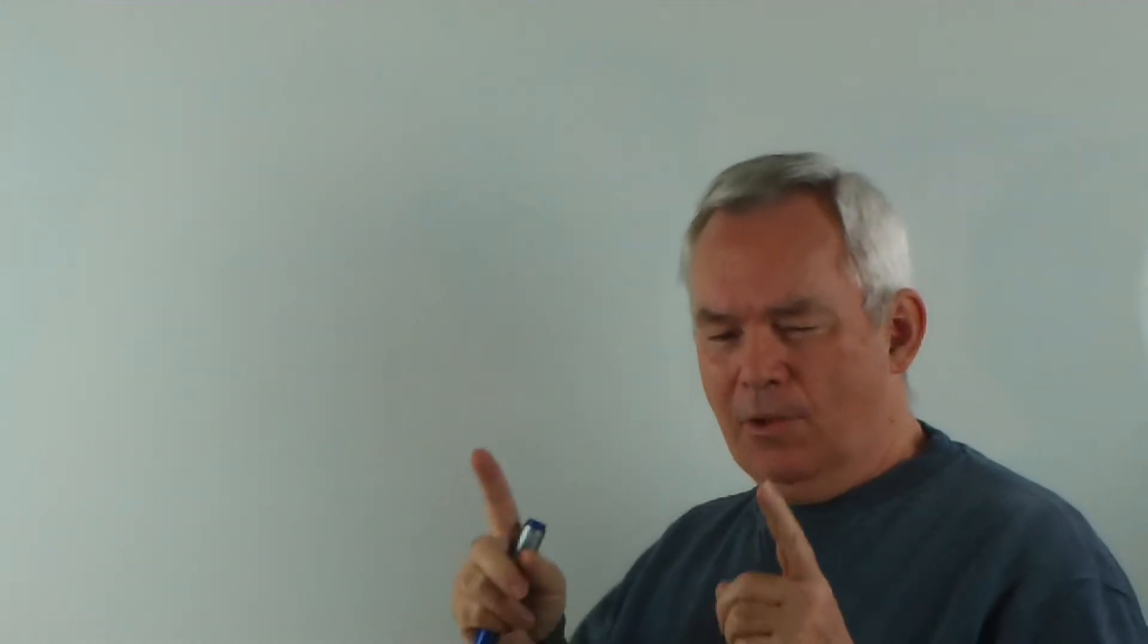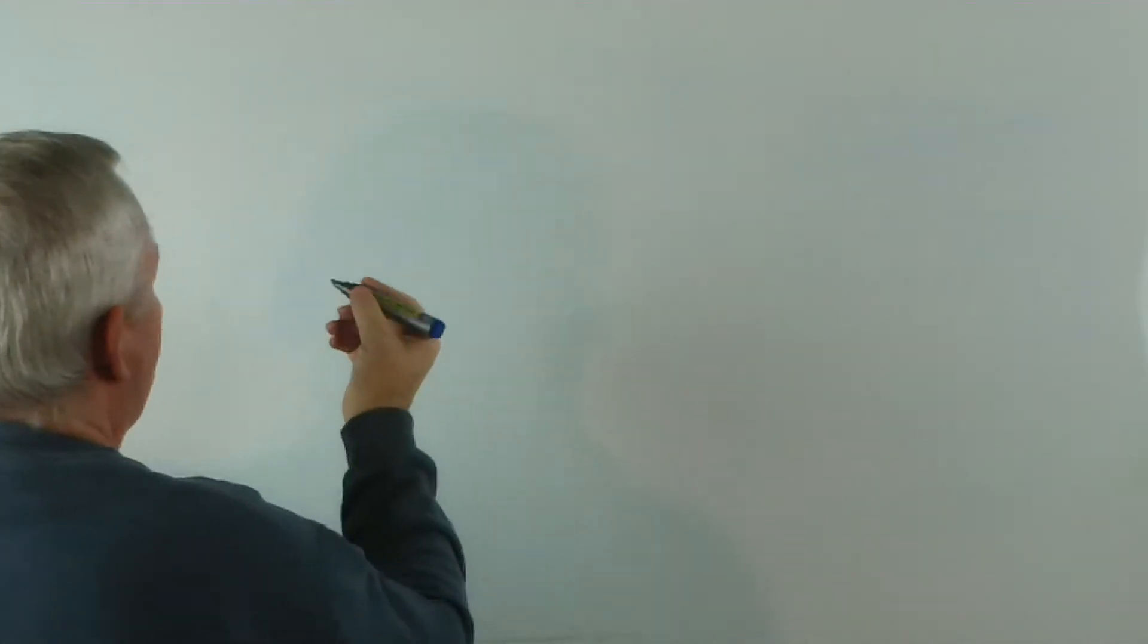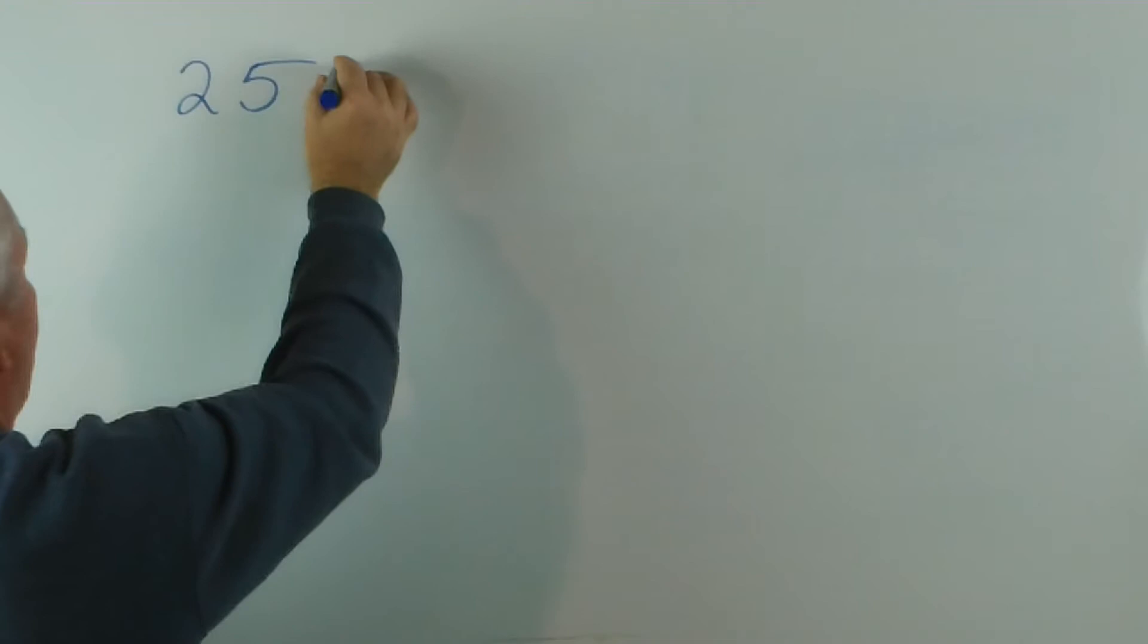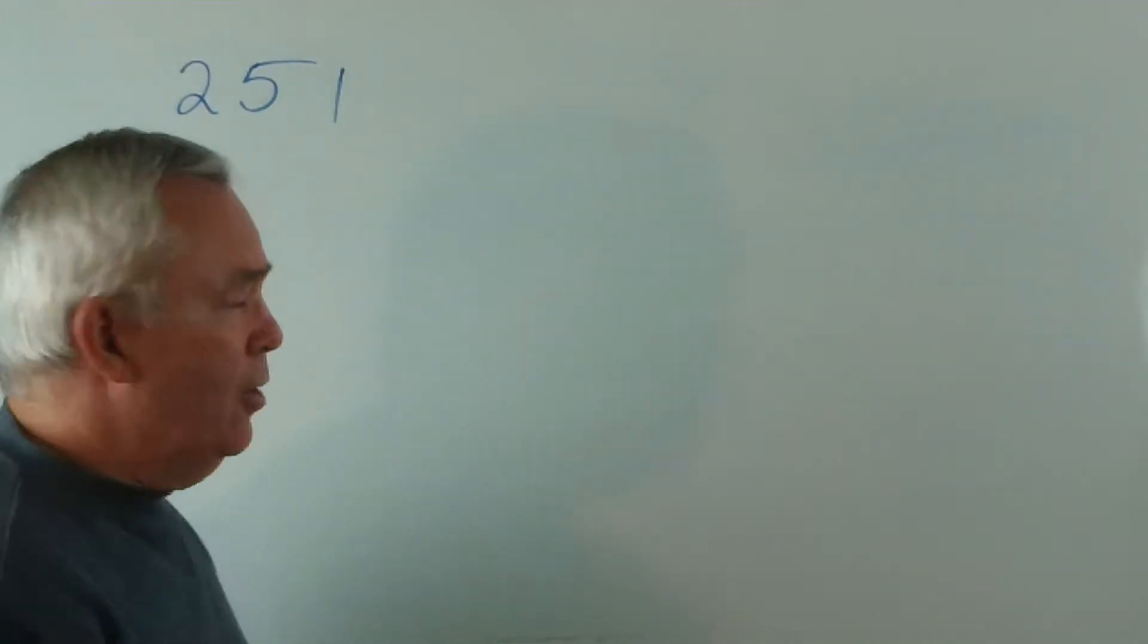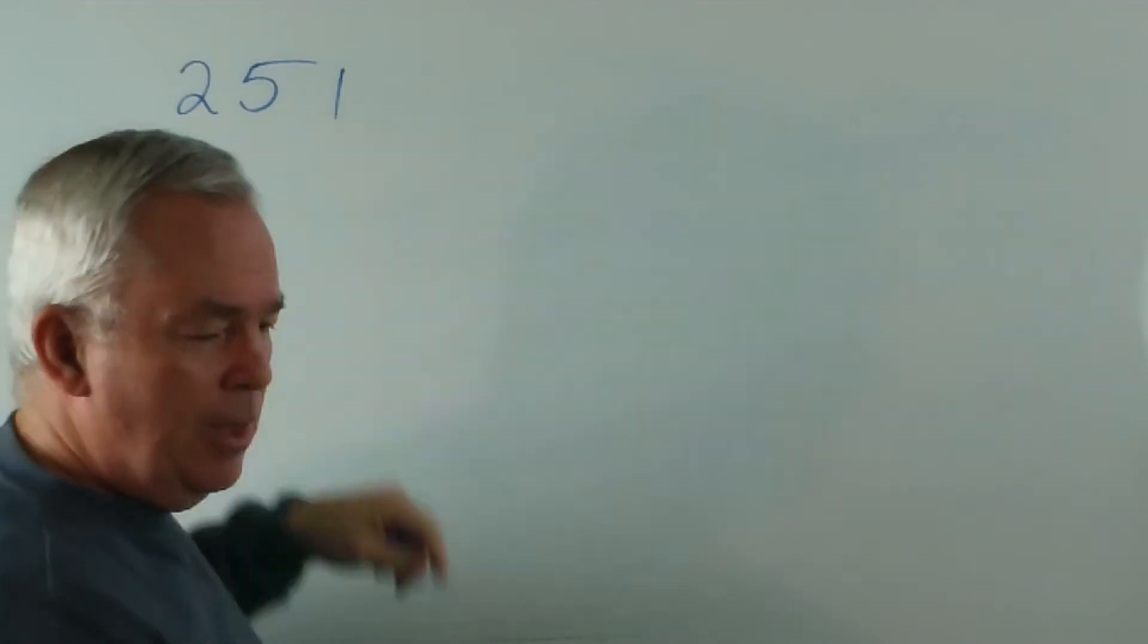I want you to choose a three digit number which is not a palindrome. Now a palindrome is something that reads exactly the same both ways. So we're talking about a number where the first and last digits are different. For example, 251... 252 would not be acceptable because we want these digits to be different.